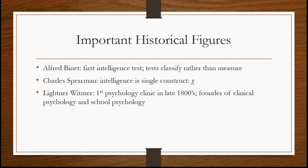Charles Spearman was another early test designer who came up with the idea that intelligence is a single construct, which he called G. Of course, this idea has been largely discredited — most psychologists now understand intelligence as composed of many different factors and variables. Finally, Lightner Witmer is significant because he's known as the first clinical psychologist and was also influential in starting school psychology. Before Witmer, psychology was seen more as a hard science; Witmer took it out of the laboratory and into the clinic, applying it for the sake of bettering people and helping them improve their condition.